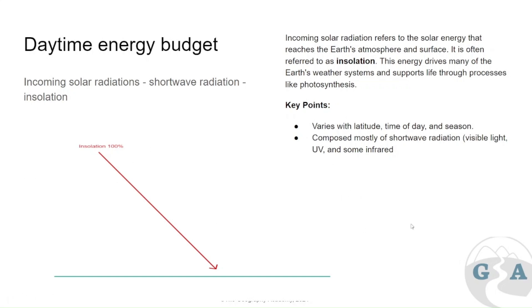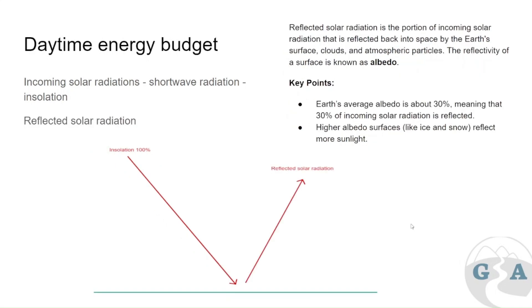We usually have visible light, UV, and some infrared — that's why it's actually bright. We're getting that intensity of shortwave radiation. The key to understanding this is what's happening with all that energy: how do we deal with it, how do we budget it?